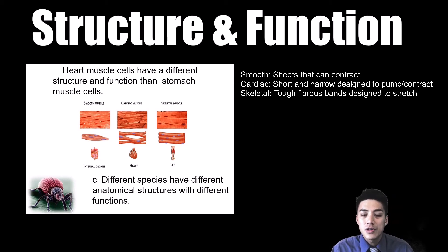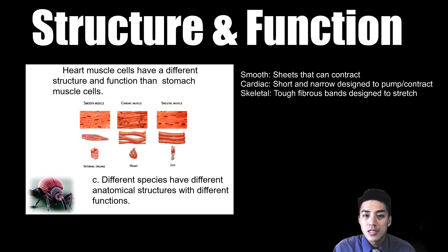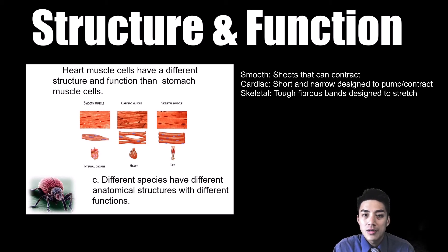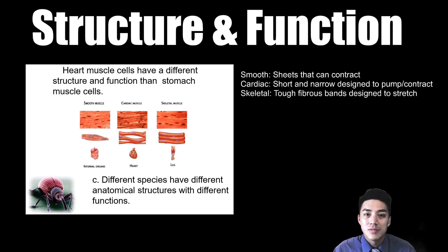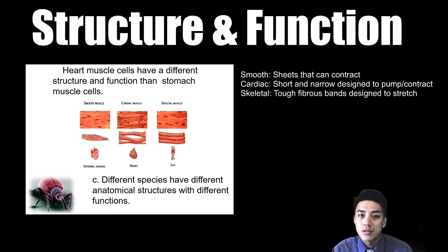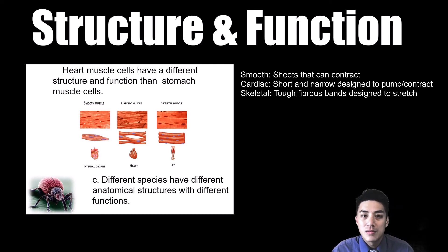If you contrast the three different types of muscle cells, you would find that smooth muscle cells are found mainly in the digestive system and they're made of thin sheets, which allows them to contract involuntarily and move food along. Meanwhile, cardiac muscle cells are short and narrow, and this allows them to pump and contract. Lastly, you have skeletal muscles, which are tough fibrous bands, and this allows them to stretch and to contract, which allows you to move.